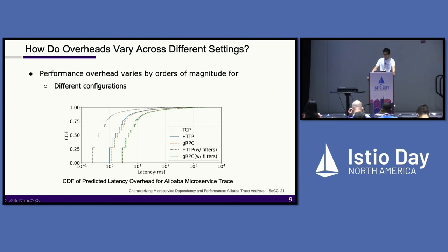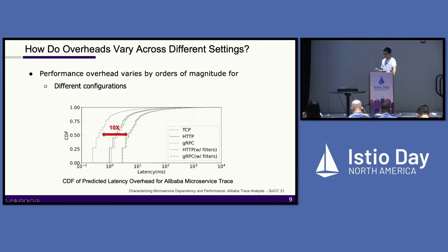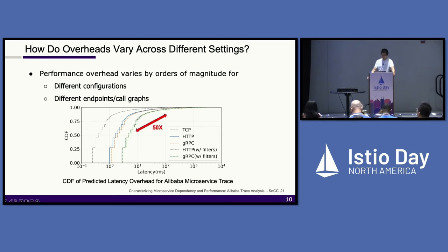Let's see how MeshInsight works in practice. We apply MeshInsight to a large-scale Alibaba microservice trace to show how overhead varies across different settings. We conduct the prediction using five configurations: TCP, HTTP, gRPC, and HTTP and gRPC with filters. The figure on the bottom shows the CDF over the predicted end-to-end latency overhead. The main takeaway is that the performance overhead can vary by orders of magnitude for different settings. When you look at the P50 value of TCP versus gRPC with a set of filters, it can vary by up to 10x. Different call graphs and endpoints also introduce huge variations. When you compare P50 versus the tail (P99) for the same configuration, it can vary by up to 50x. We have a similar observation for CPU usage overhead as well.